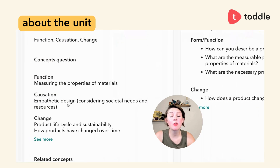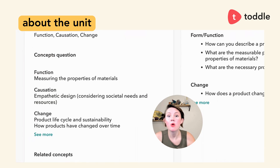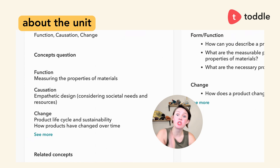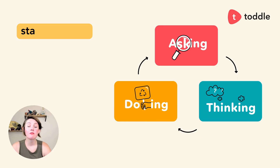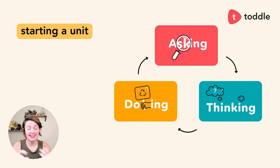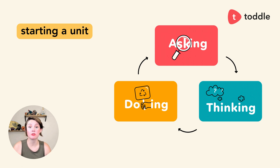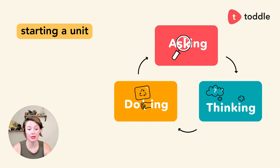Specifically, we'll look at properties of materials and how we measure them. We'll also look at the empathetic design cycle, how we meet consumer needs, and how products have changed over time to become more sustainable. For this video, we'll be in that first stage of the inquiry: asking. In this stage, we're really trying to figure out what our students already know and what they might want to explore in further inquiry.